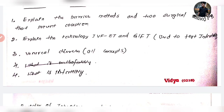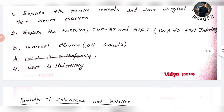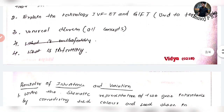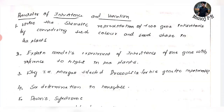Infertility means not being able to conceive — not able to give birth to a baby. Next, the principle of inheritance and variation — this is the most important chapter.